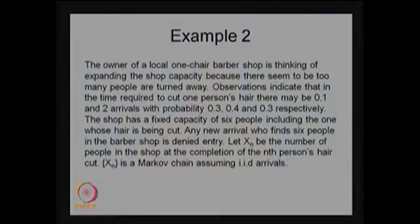This number is counted at the departure time point. When the nth person leaves, how many people are in the system? The system allows a maximum of six people, so he cannot see more than five people in the system when he leaves. Because during one person's service either 0, 1, or 2 arrivals can take place, the stochastic process Xn is going to be a discrete time, discrete state stochastic process.